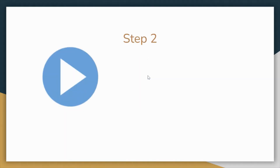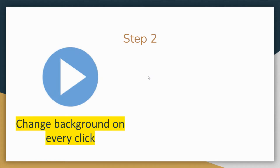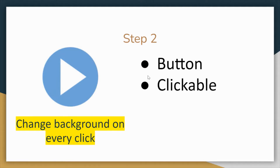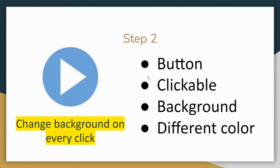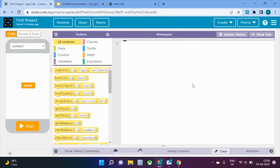Let's figure out what we're going to do by breaking up the entire task. We need a clickable button, and we need a background that will change color on every click. That's pretty much it — let's head to the platform where we'll be building our code.